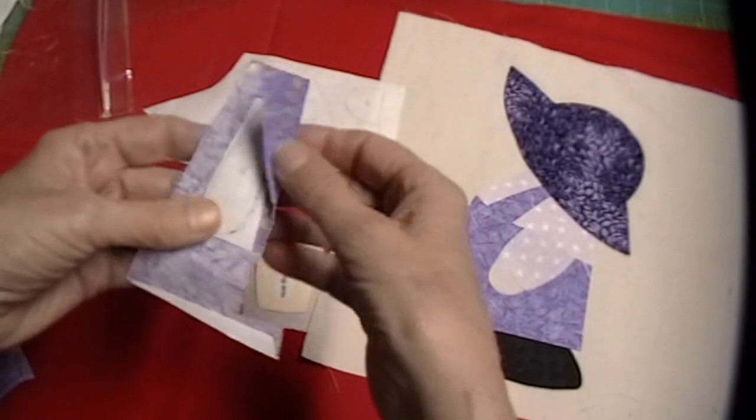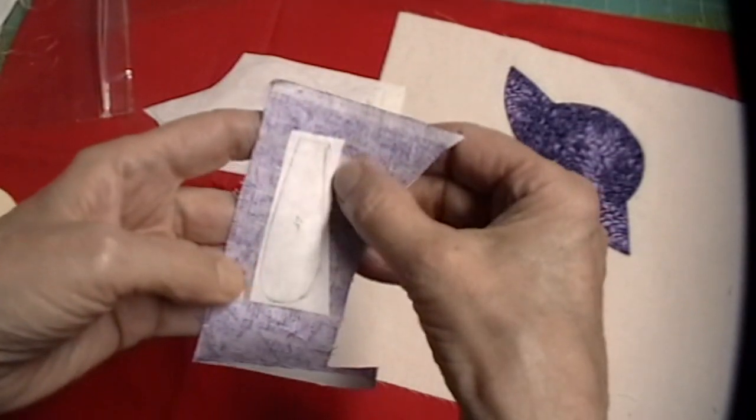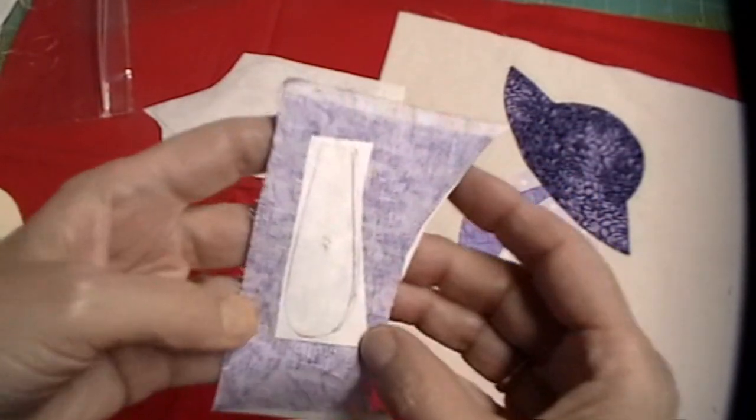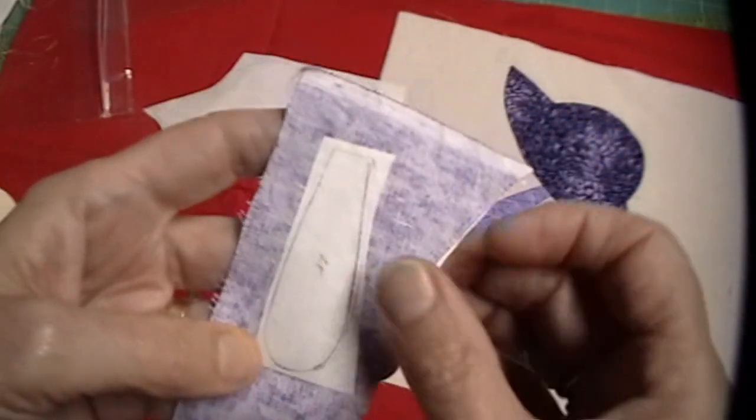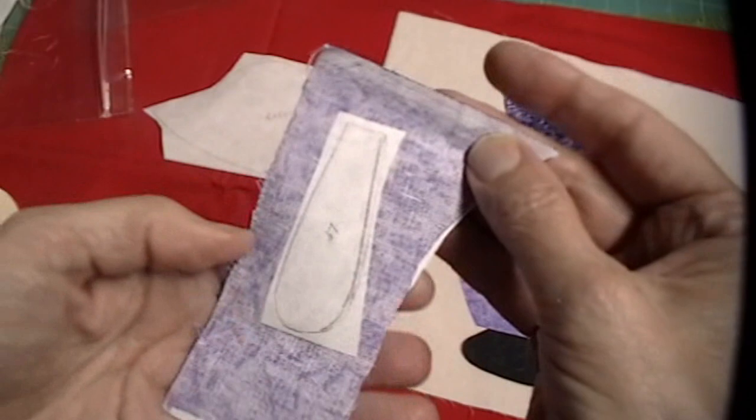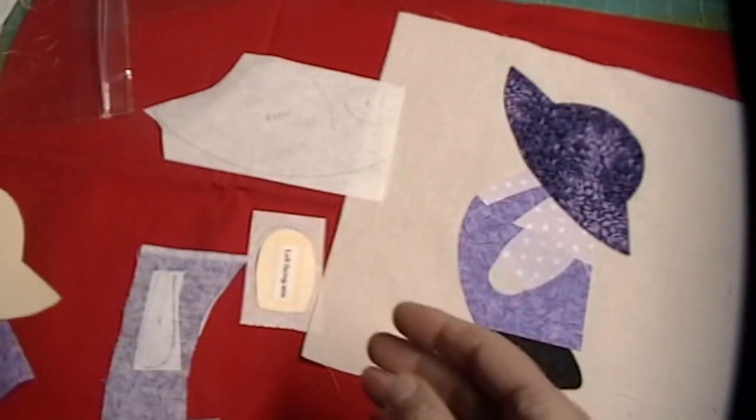Here we have his little strap. You cut out around, but not on the line, the piece. Then you iron it on the wrong side of the fabric and then cut the piece out.